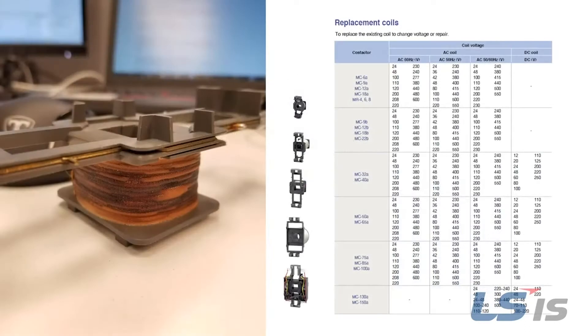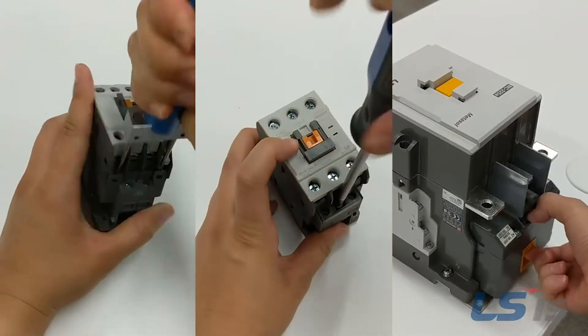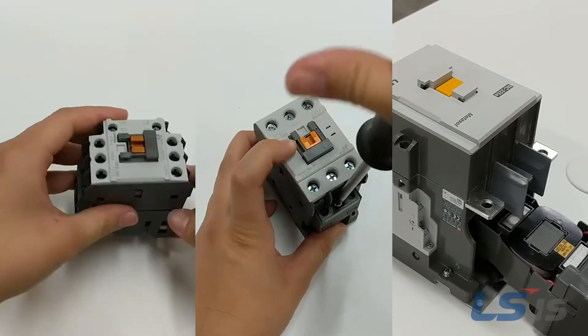If there is a situation where a coil is damaged and needs to be replaced, or simply a different coil voltage is needed for a MC or MR contactor, follow these instructions. Different frame sizes vary in the disassembly and reassembly methods. To skip to the frame size you need, see the description box below.